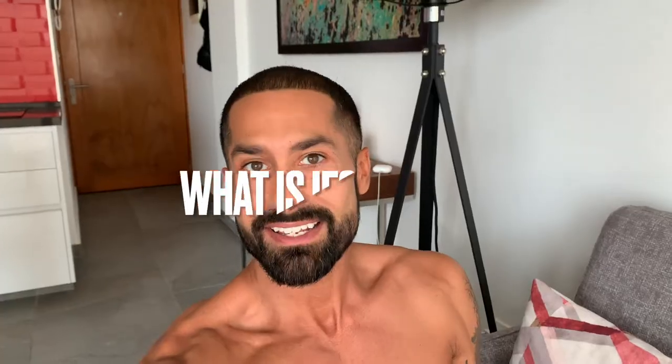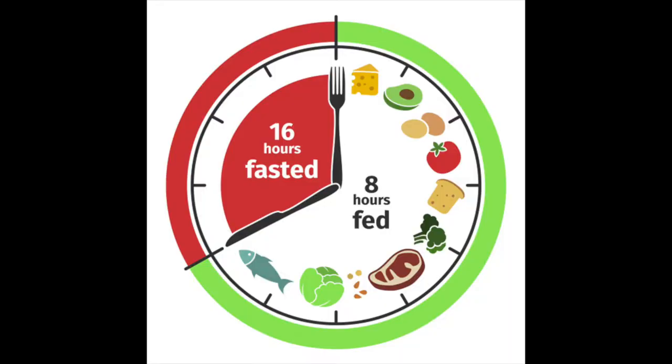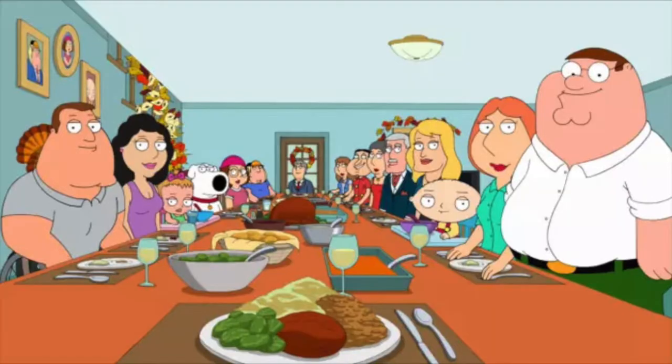What is intermittent fasting? It's essentially just designated periods of time that you go without eating and designated periods of time where you do eat. The most common setup is called a 16-8 setup — you eat for eight hours and you do not eat for 16 hours. This typically just looks like skipping breakfast because it's far easier to skip than dinner from a behavioral and social aspect, since breakfast we tend to eat solo and dinner we have with friends and family.